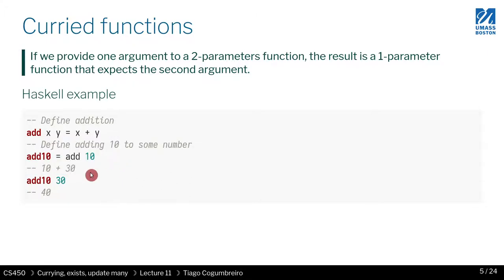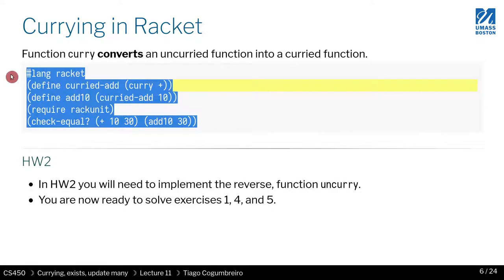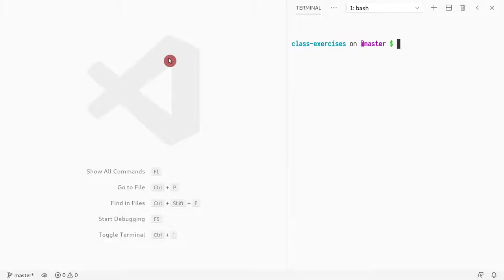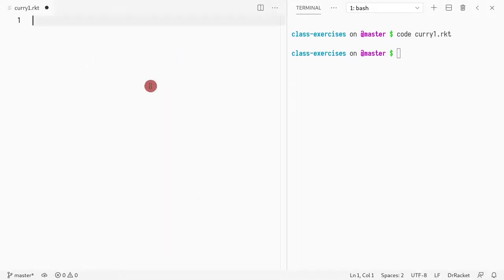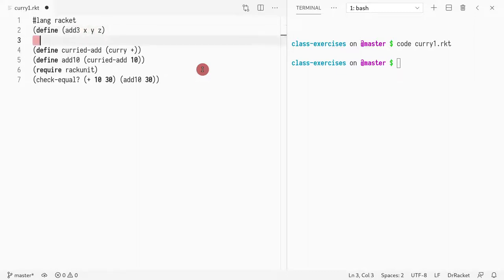But this is how the language works and if you're programming in Haskell that is expected behavior. We can do the same thing in Racket - we saw this example in our last lesson. Now I'm going to paste this and define a function that adds three numbers together. I take an x and y and z and what I do is plus x y and z.